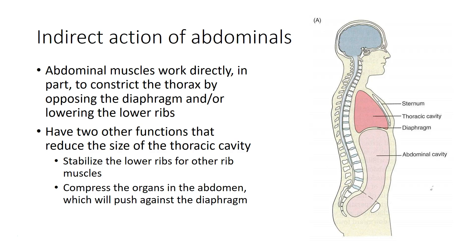The abdominal muscles work indirectly: contraction pulls on the lower ribs, working in opposition to the inspiratory muscles and the diaphragm. Contraction of the anterior abdominal muscles also compresses all of the contents of the abdominal cavity. Those contents can't go posterior because the vertebral column is in the way, and can't go inferior because of the pelvic girdle. So if you compress them anteriorly, the only direction of movement they really have is superior, pushing into the diaphragm.